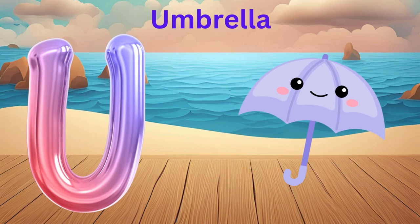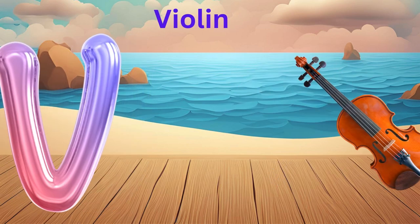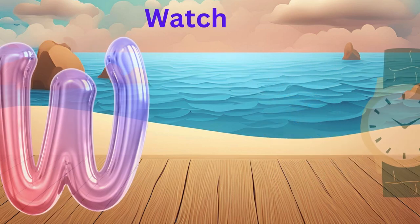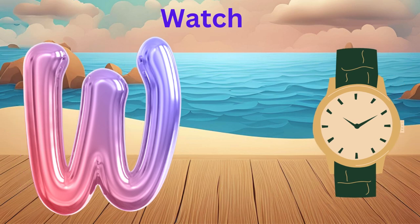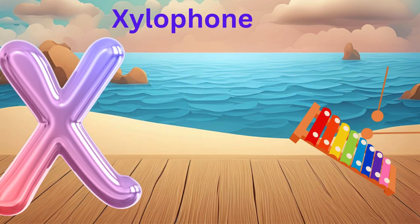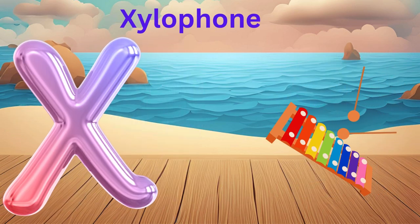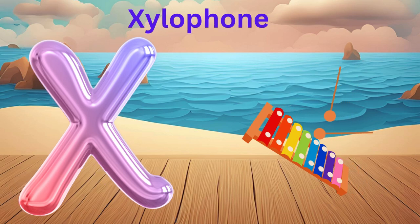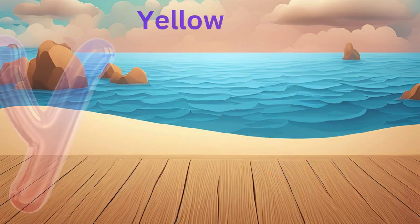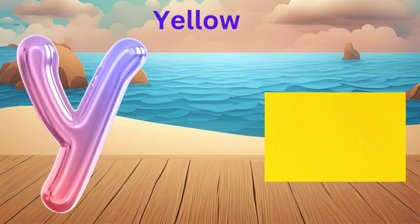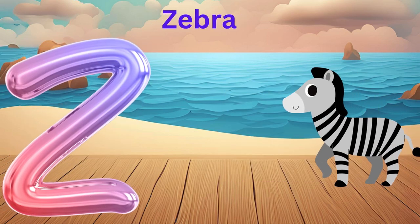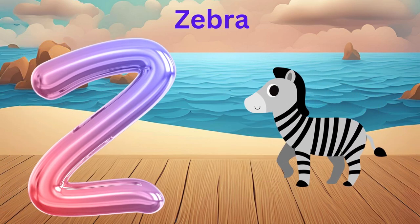U is for Unicorn, U-U-Unicorn. V is for Vulture, V-V-Vulture. W is for Watch, W-W-Watch. X is for Xylophone, X-X-Xylophone. Y is for Yellow, Y-Y-Yellow. Z is for Zebra, Z-Z-Zebra.